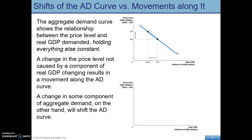A change in one of those components of aggregate demand — the C, the I, the net exports — would be a shift of the aggregate demand curve. For example, why would a shift in consumption be a shift of the aggregate demand curve? If Americans suddenly became more concerned about saving for retirement...